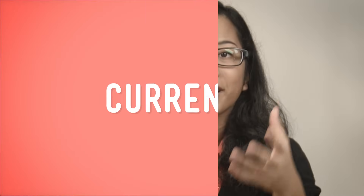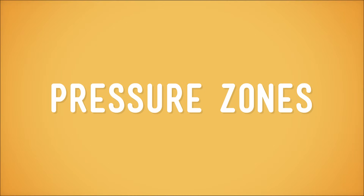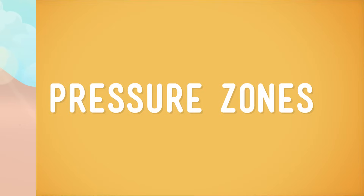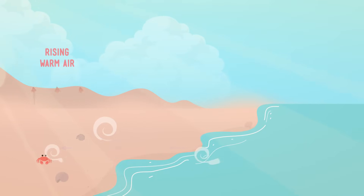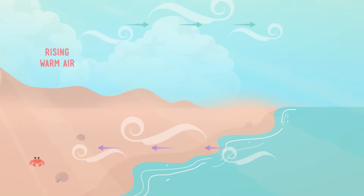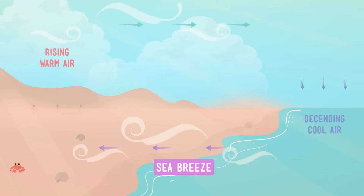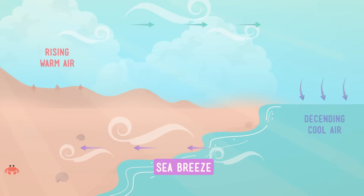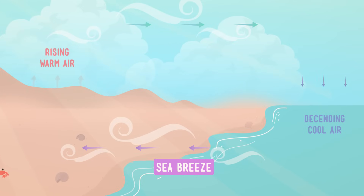A few episodes ago, we learned that the uneven heating of land and water creates wind by forming different pressure zones. The air above the land is warmer and less dense, so it rises. And the air over the water is cooler and heavier. The cool air rushes in toward the low pressure zone over the land, forming a lovely sea breeze.